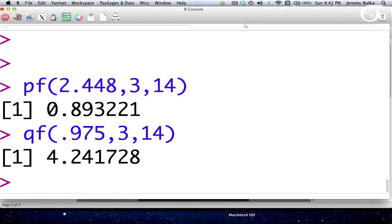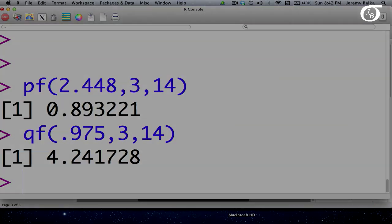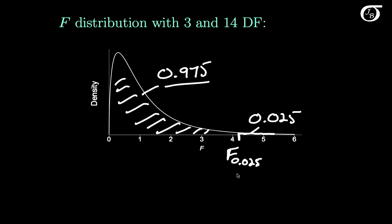And it's 4.2417. So R tells me that this value is 4.2417. So the probability that a random variable with this distribution takes on a value that is greater than 4.2417 is 0.025.